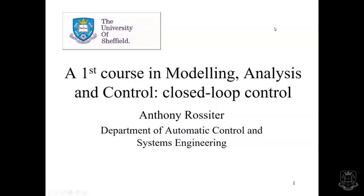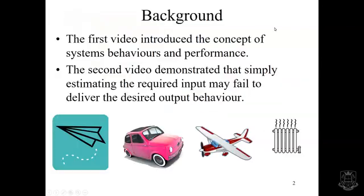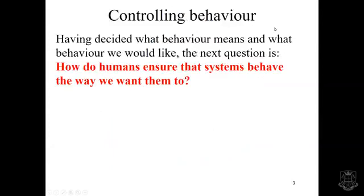This is the third video in an introduction to a first course in modelling, analysis, and control. Here we're going to introduce some concepts of closed-loop control. The first video introduced the concepts of systems, behaviors, and performance, whereas the second video demonstrated that simply estimating the required input may fail to deliver the desired output behavior. So how do we control behavior then? Having decided what behavior means and what behavior we would like, the next question is how do humans ensure that systems behave the way we want them to?